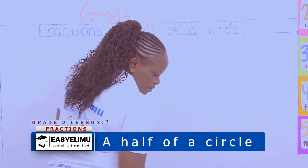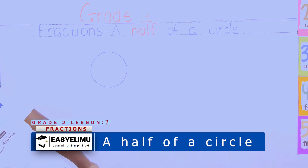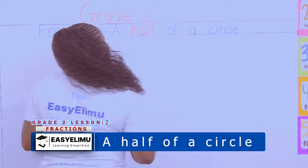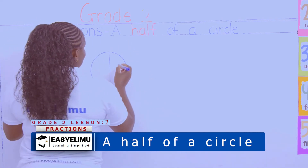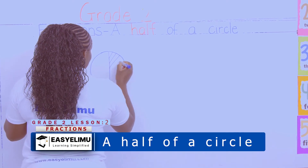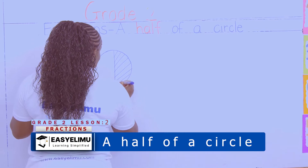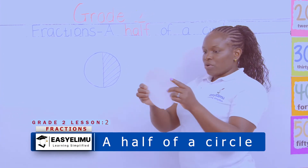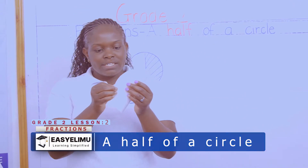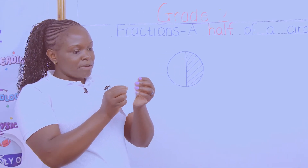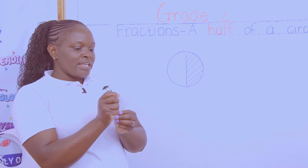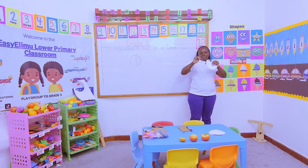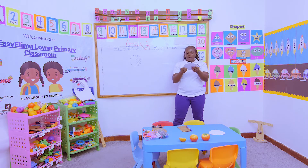I want to divide this orange into two equal parts. Assuming that this is the part that Janet gave the brother — take out your cutouts. This is your whole, full orange. Janet takes the orange; fold that paper nicely into two equal parts so that no part is bigger than the other. Fold it into two equal parts.